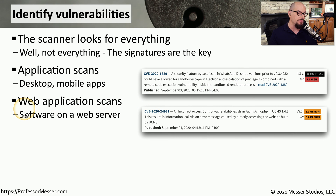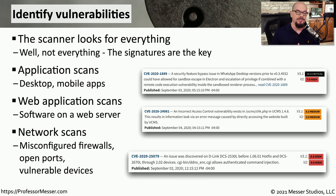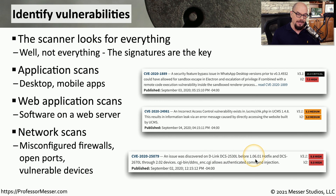There are also vulnerabilities you may find associated with web-based applications — software running on a web server. Here's an example of one in a PHP file for an organization, UCMS, that has product version 1.4.8, which results in an information leak via an error message, providing information that it should not be providing. And of course, there could be scans against network devices on your network where you get information about misconfigured firewalls, devices that have ports open that perhaps should not be open. This is vulnerability CVE-2020-25079, discovered on D-Link DCS2530L before version 1.06.01 hotfix, which allows authenticated command injection — a vulnerability on the router itself that would need to be resolved with a firmware upgrade.